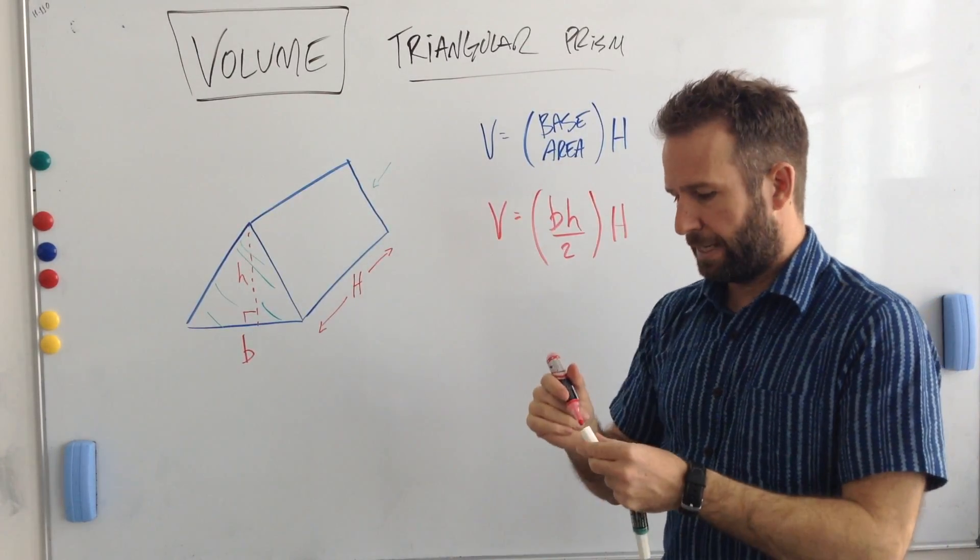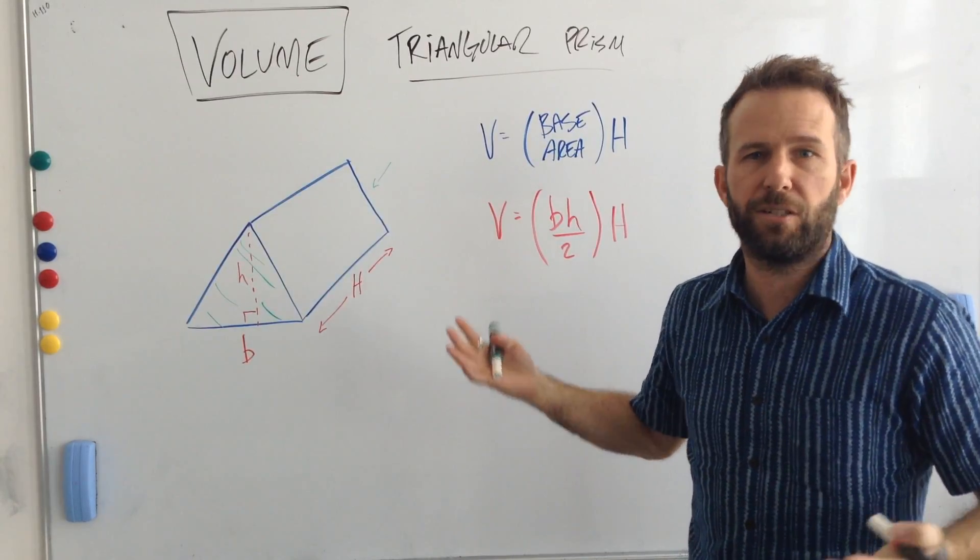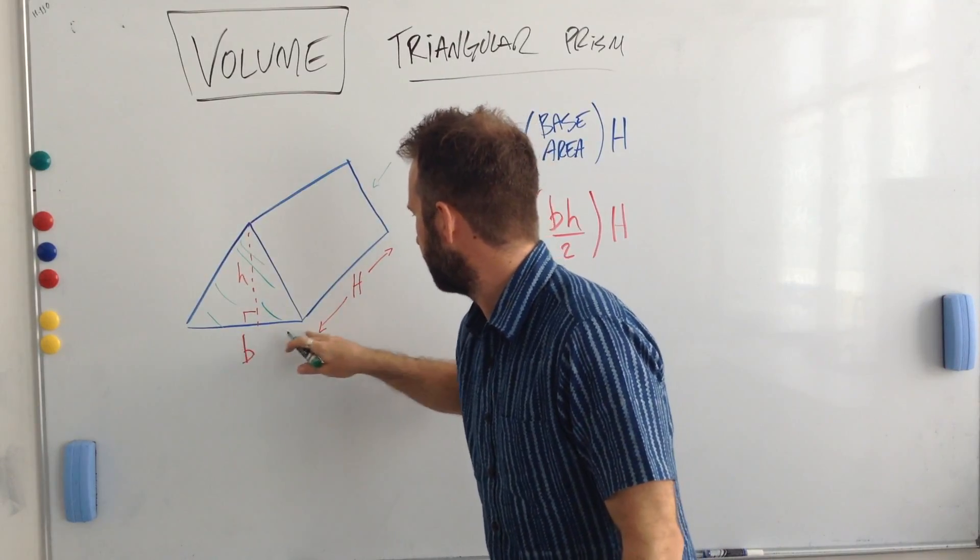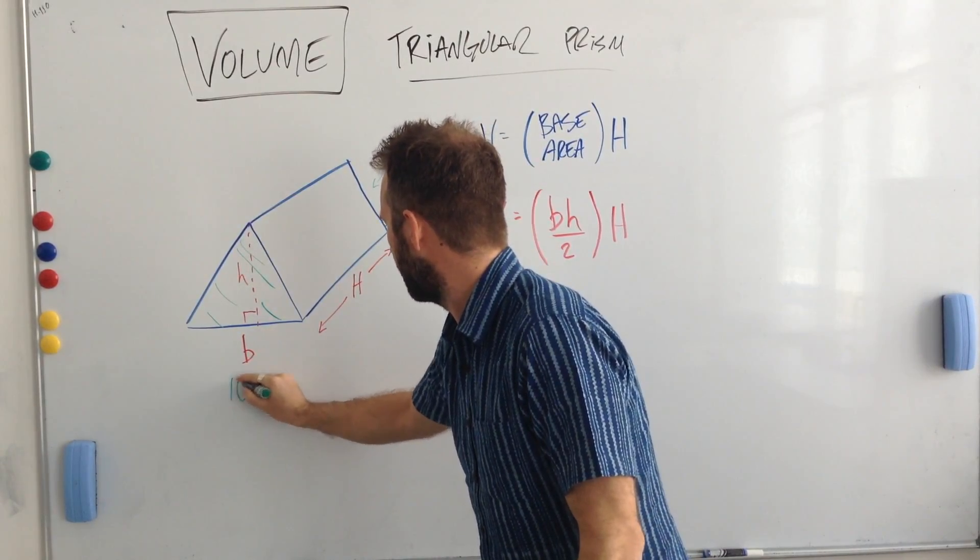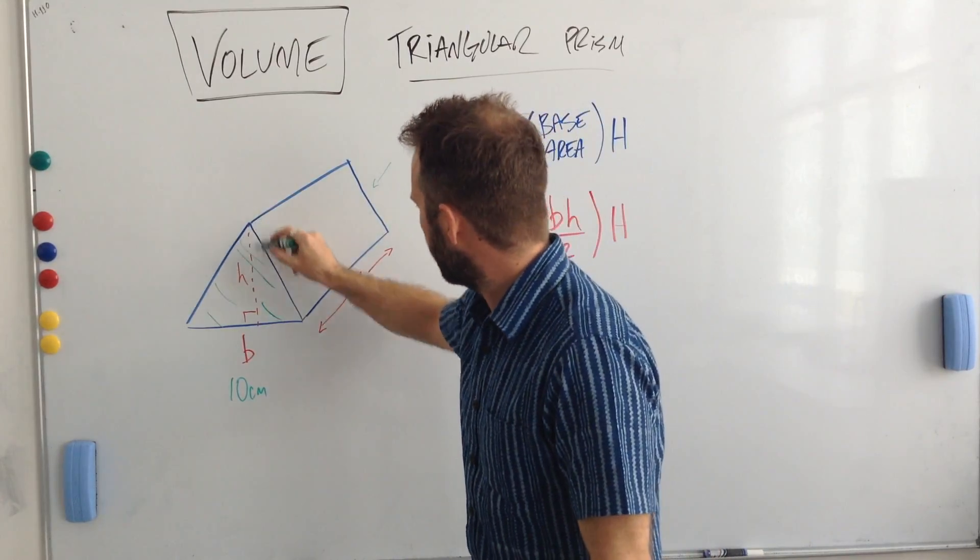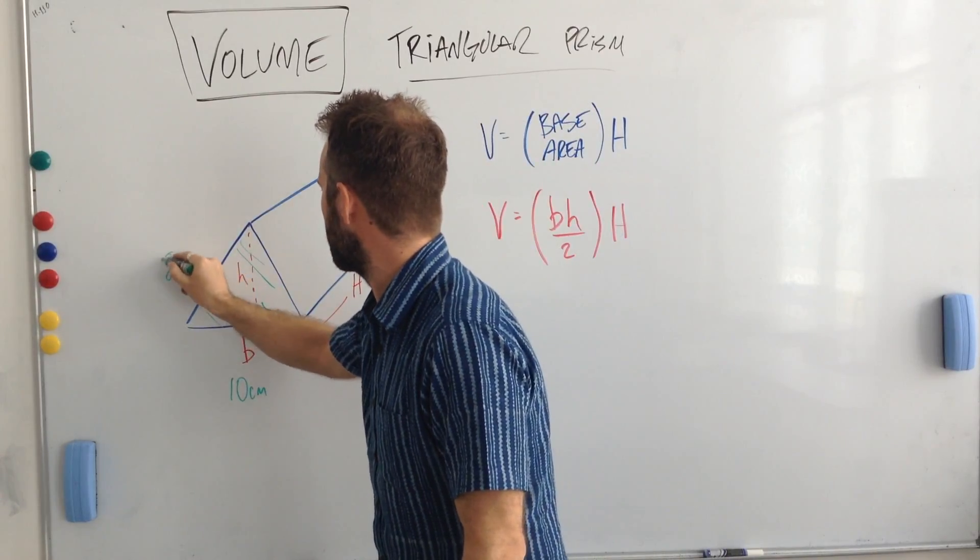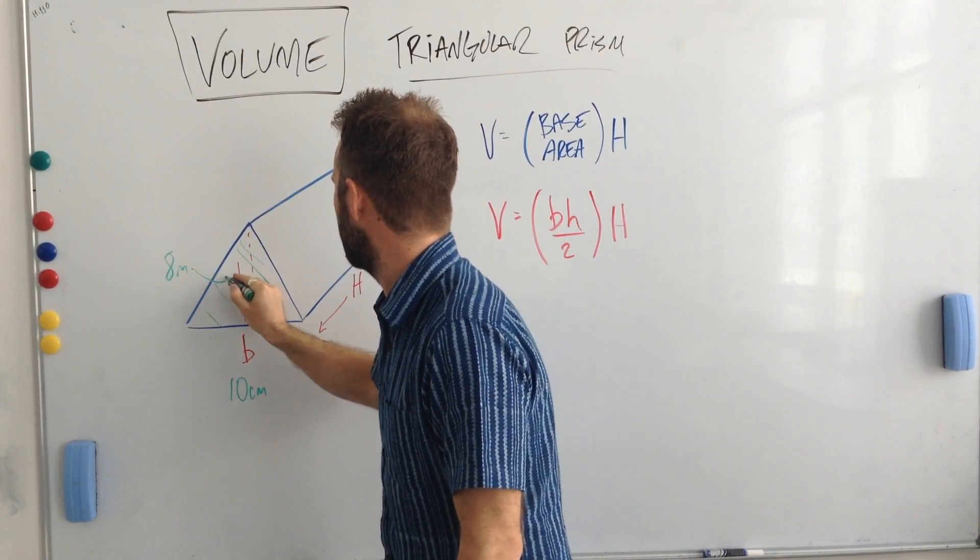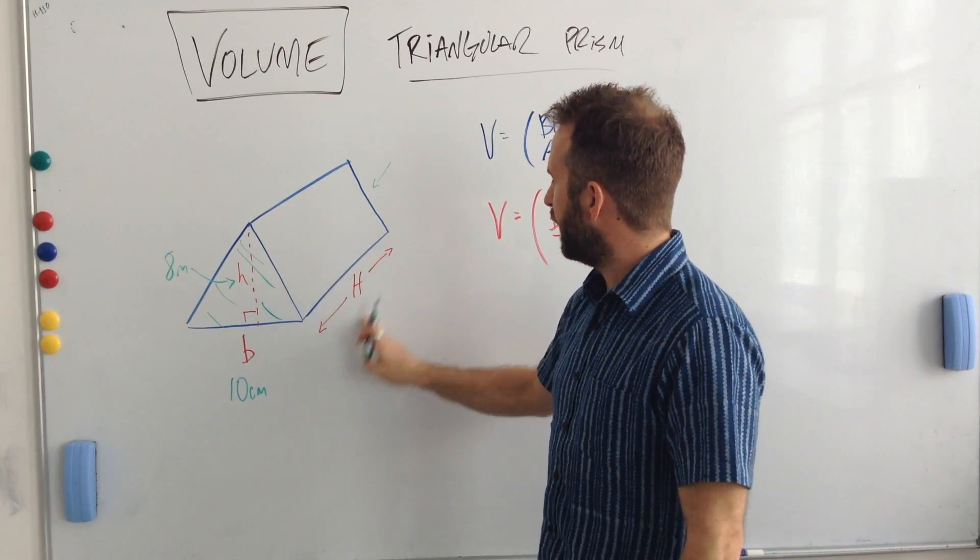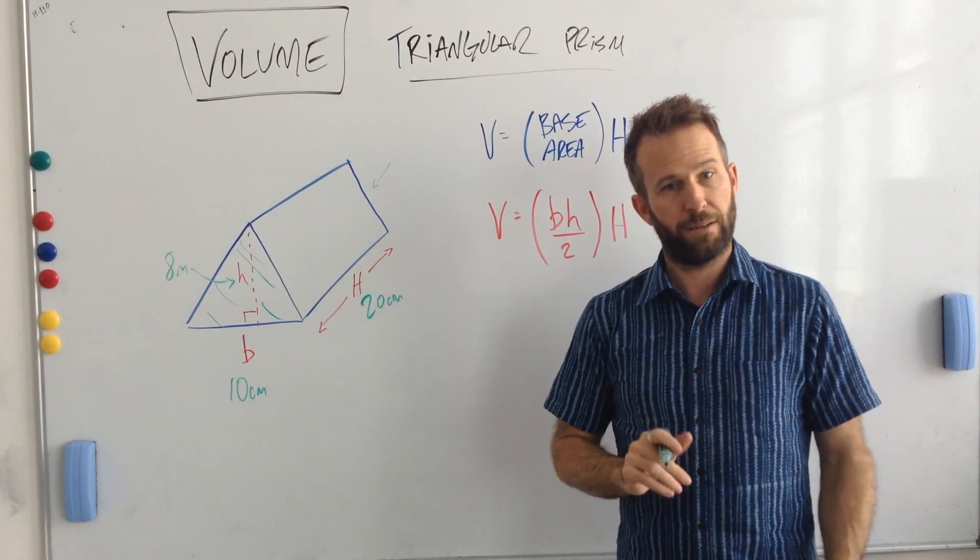What I'm going to add now is a little example. I'll put some numbers to this so we can practice one and just see how it all works out. Let's say that in this case the base of the little triangle here is 10 cm long. Let's say the little h of the triangle here, the height of that base triangle, is 8 cm high. That's that one in there. And then let's say our big H distance here is 20 cm between our bases.